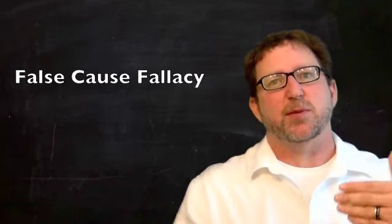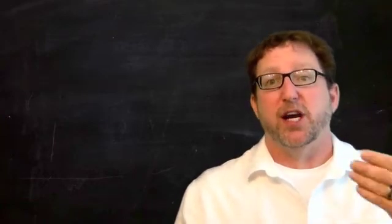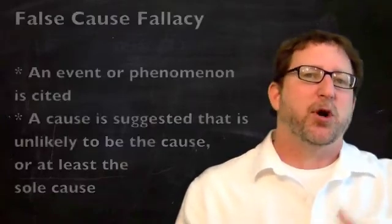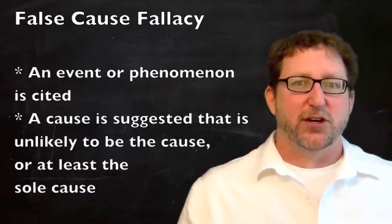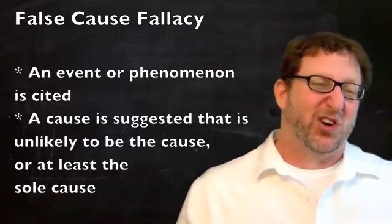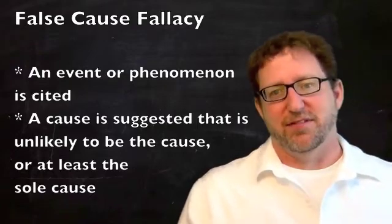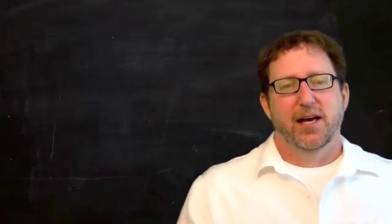Sometimes we're confused because two things happen at the same time, and we assume that there's some sort of causal connection. All right. So the false cause fallacy gives us some sort of event or phenomenon and then proposes a cause of that phenomenon or event, which is not at all likely to have been the cause or at least not the sole cause of the event.